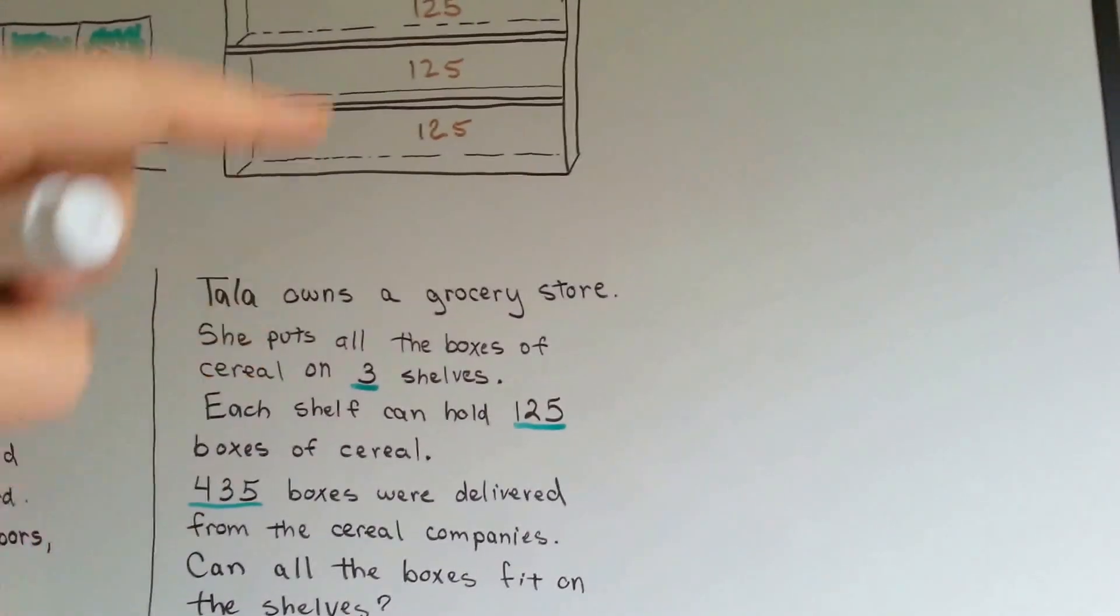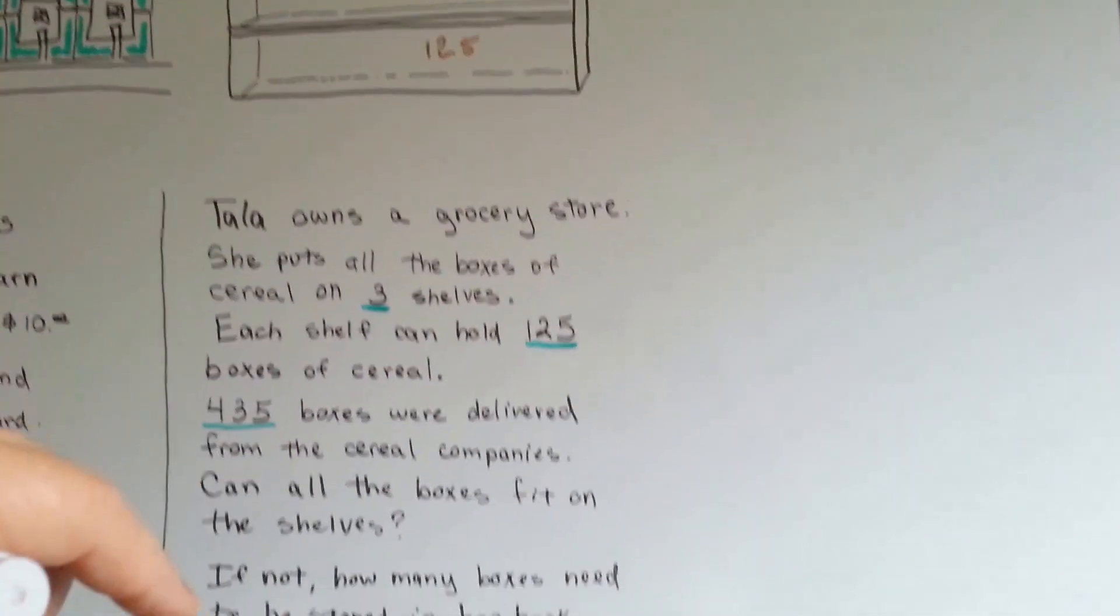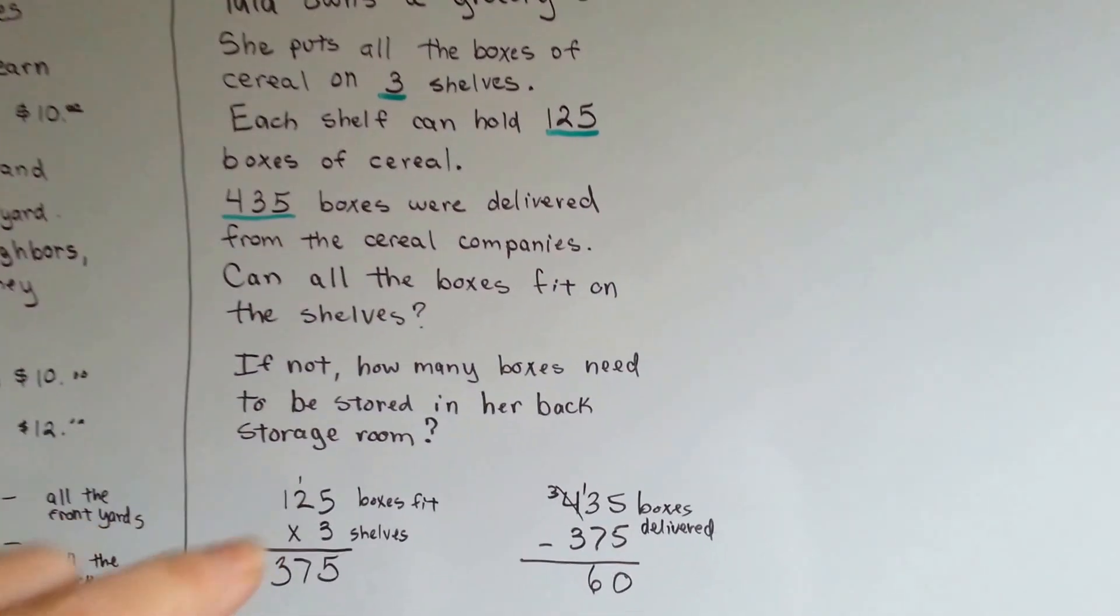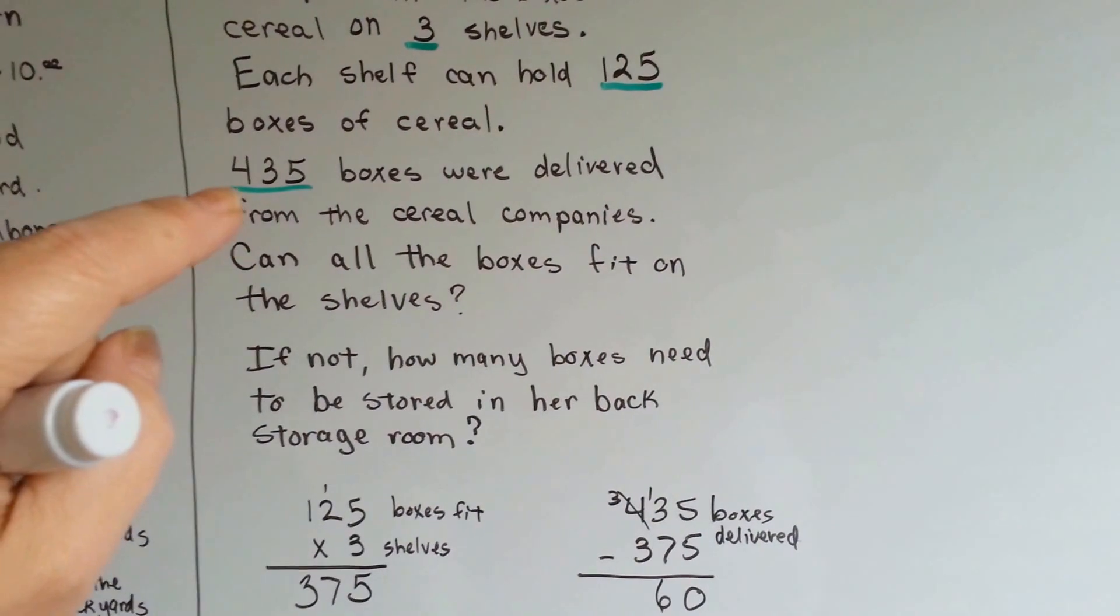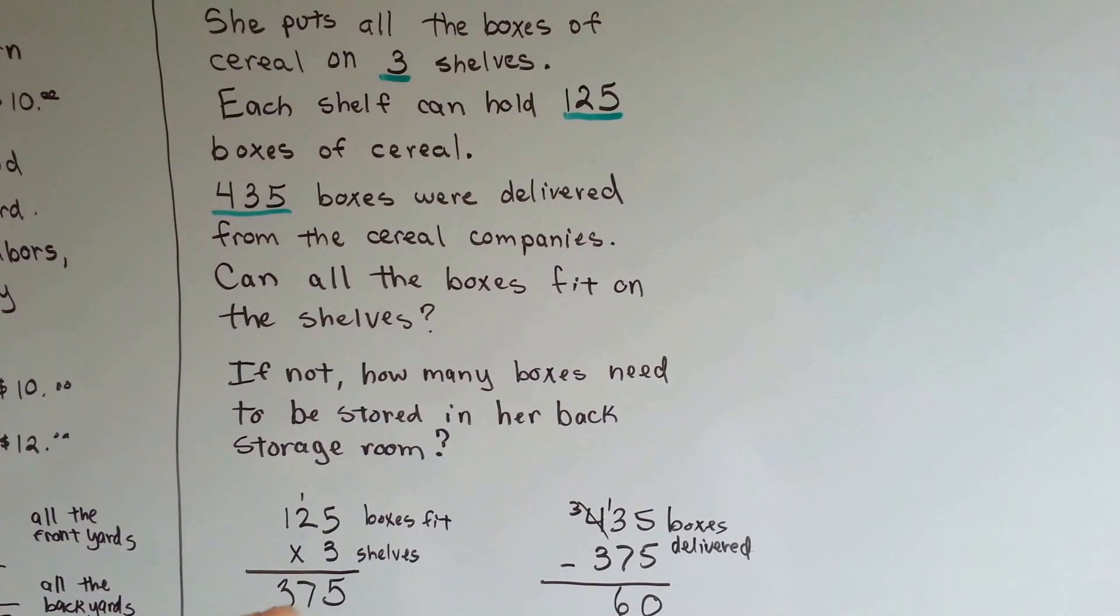Can she fit four hundred and thirty-five boxes on here? Well, a hundred and twenty-five boxes on three shelves is three hundred and seventy-five boxes. So no, four hundred and thirty-five boxes won't fit. She only has room for three hundred and seventy-five.